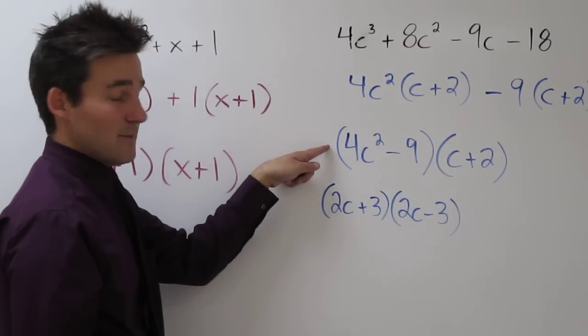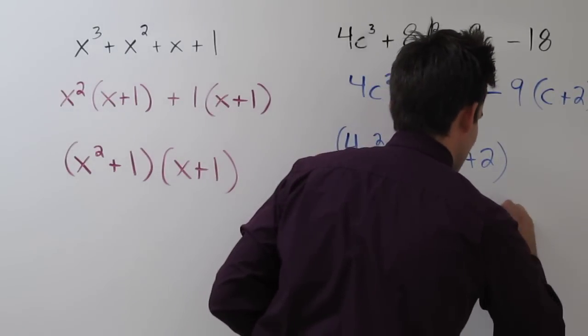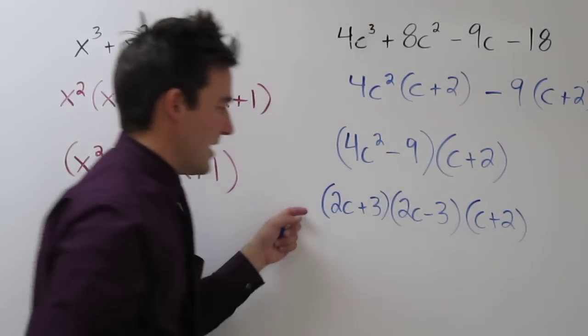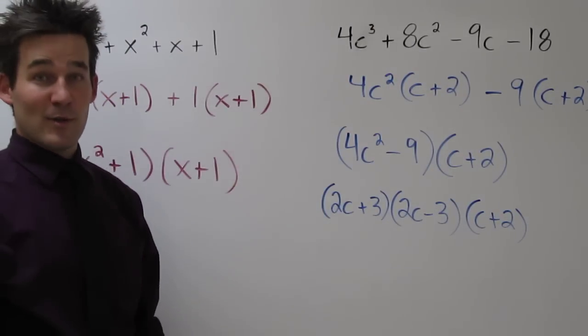So that's this binomial factor. And then we need to keep our original c plus 2. At this point, we have completely factored our original expression.